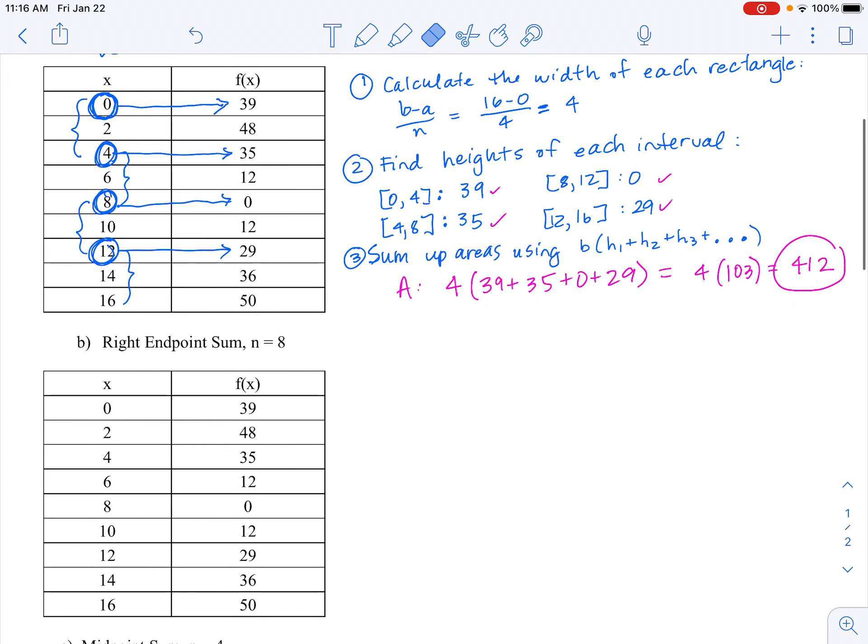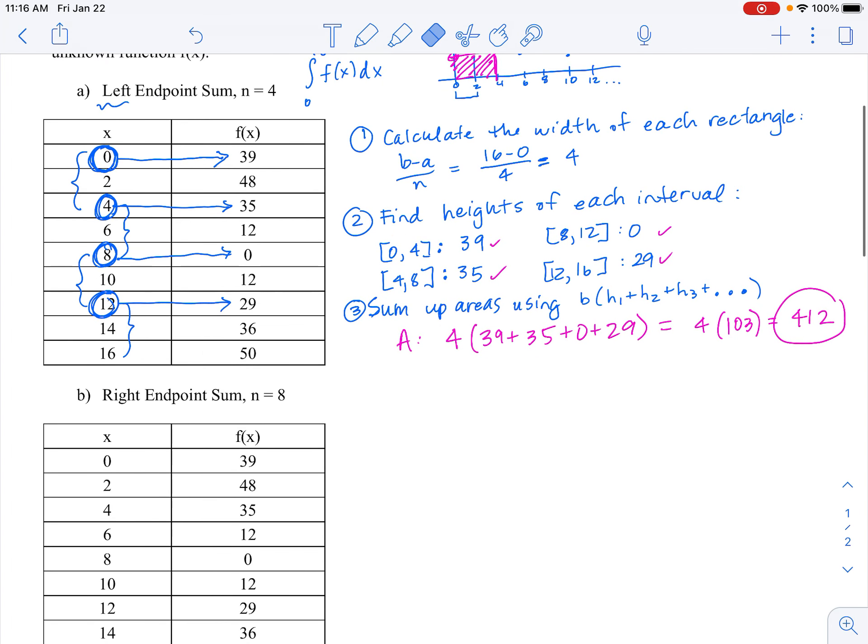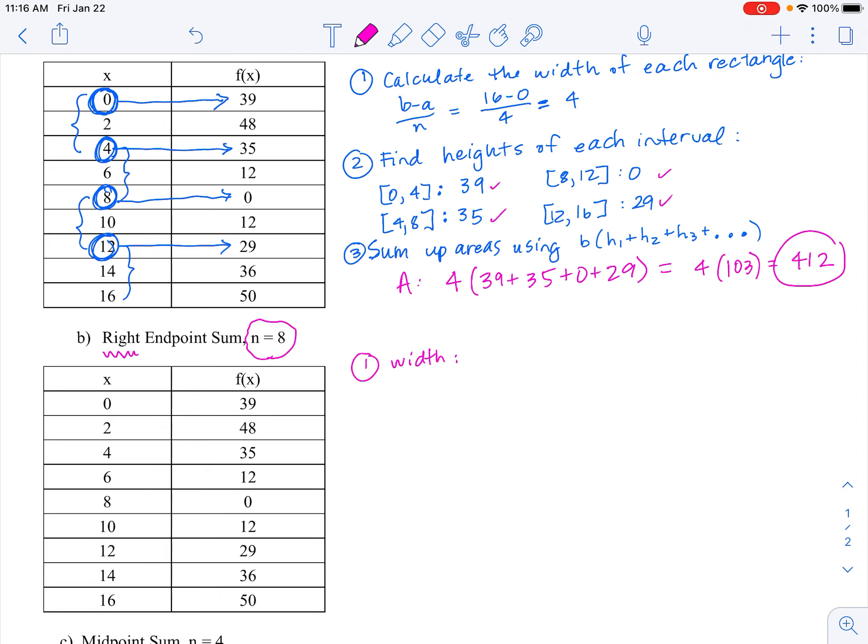Alright, so let's move down to the second one. Now you'll notice a couple things are changing. Now we're switching to right endpoint, and we're also editing our number of rectangles to be 8. So when we do step 1 here, where we calculate the width or base of the rectangle, we are doing 16 minus 0, b minus a, divided by n is 8 this time, so now each rectangle is only going to be 2 units wide.